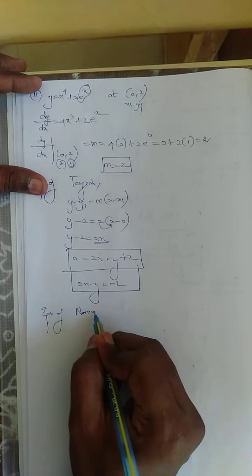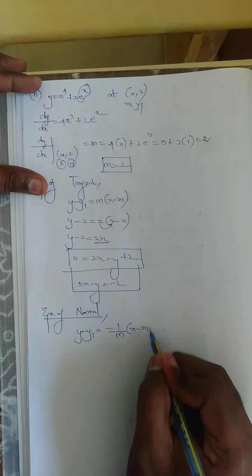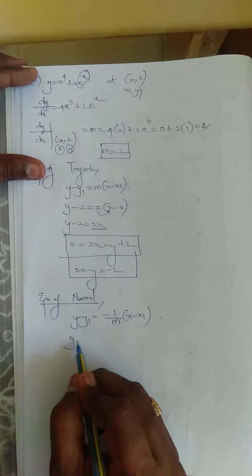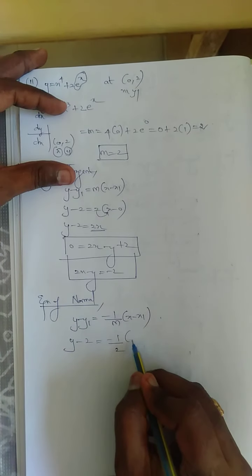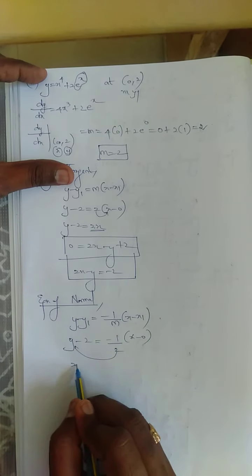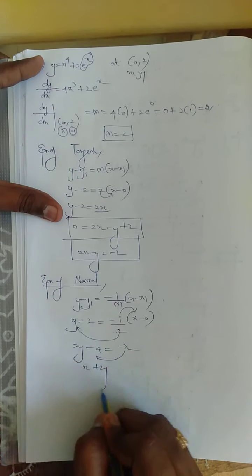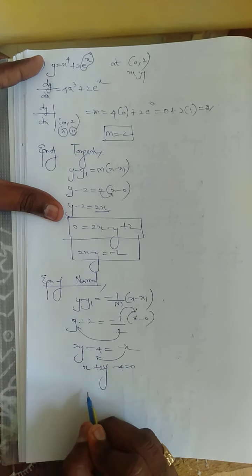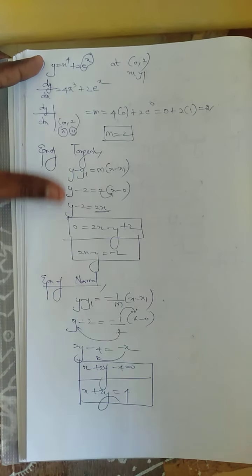Equation of normal: y minus y₁ = (-1/m)(x minus x₁). With y₁ = 2, m = 2, x₁ = 0: y - 2 = (-1/2)(x - 0). Cross-multiplying: 2(y - 2) = -x, so 2y - 4 = -x, giving x + 2y - 4 = 0, or x + 2y = 4. Both answers are correct.